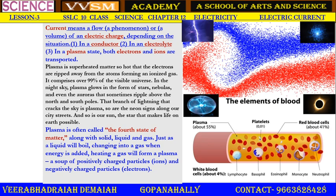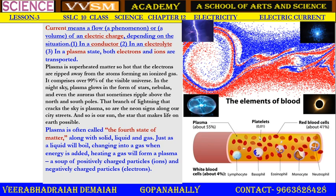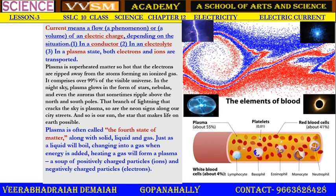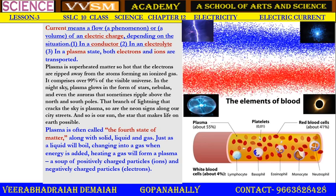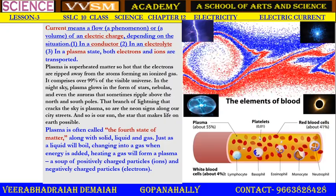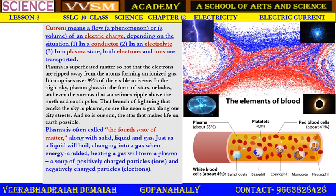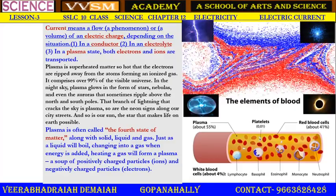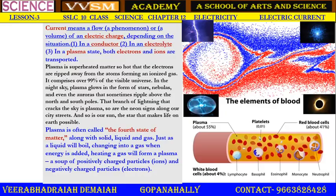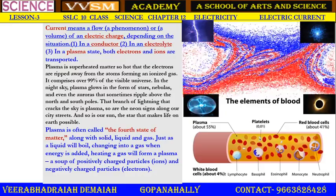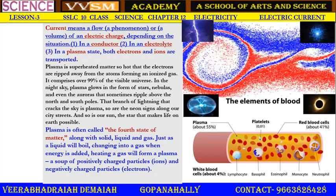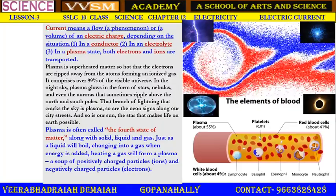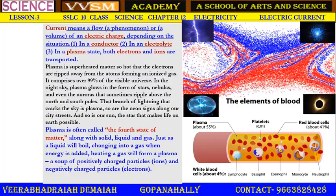Current means a flow — a phenomenon in electricity. In electricity, a volume of electric charges: in the case of a conductor it is in the form of atoms; in an electrolyte it is in ions; in plasma, both electrons and ions are transported from one place to another. Plasma is the superheated matter — so hot that the electrons are ripped away from the atoms, forming ionized gas.